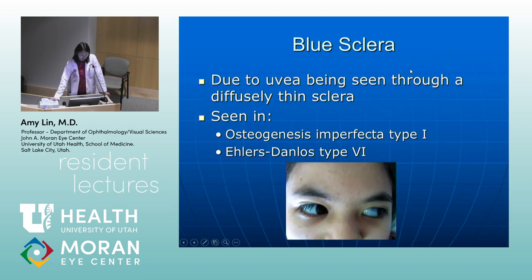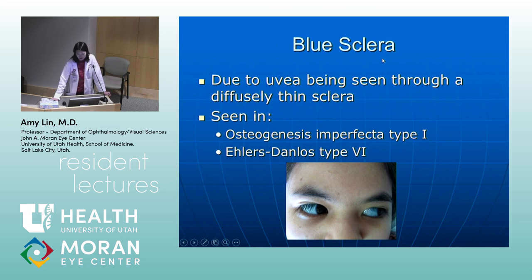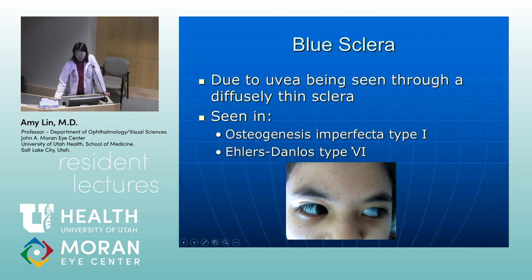Blue sclera is almost the opposite as far as sclera goes. It's due to the uvea being seen through a diffusely thin sclera. This is seen in osteogenesis imperfecta type one, which is autosomal dominant and associated with bone fragility. It's also associated with Ehlers-Danlos type six, which is autosomal recessive and associated with joint hyperextensibility and cardiac issues. This is not something we typically treat — just something that's noted, and it's not progressive.